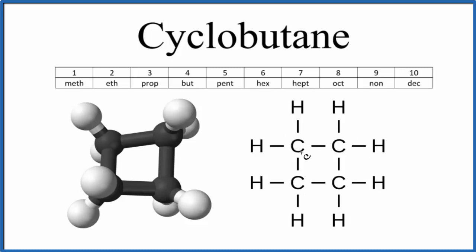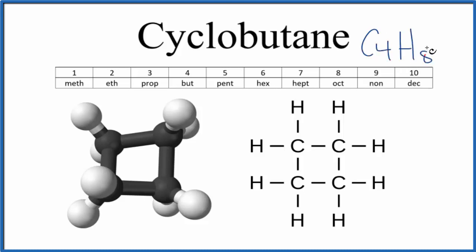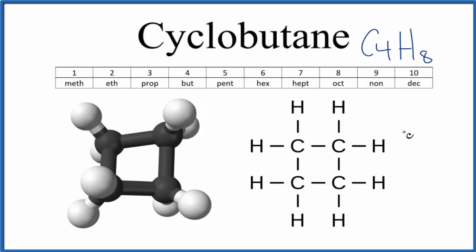That's because carbon normally has a bond angle of 109.5°, but here it can't achieve that with just four carbons, so it bends to increase the bond angle closer to 109.5°. That's the structure for cyclobutane. For the molecular formula, we have four carbons and eight hydrogens, so the molecular formula is C₄H₈. This is Dr. B — thanks for watching.